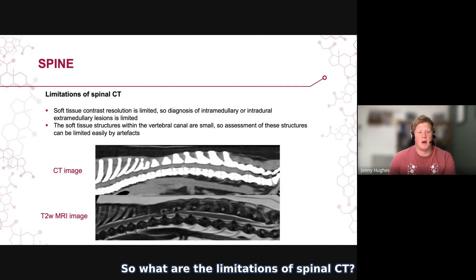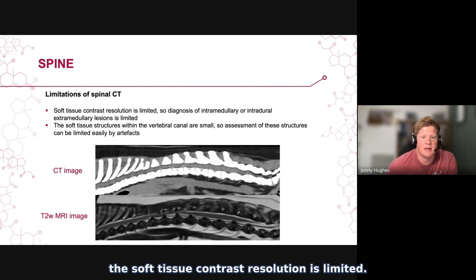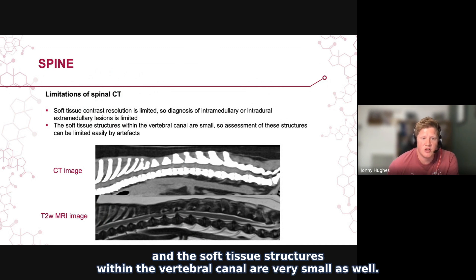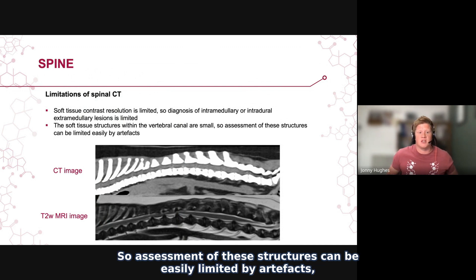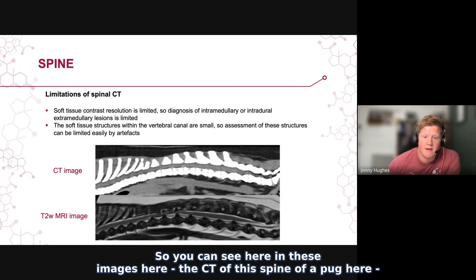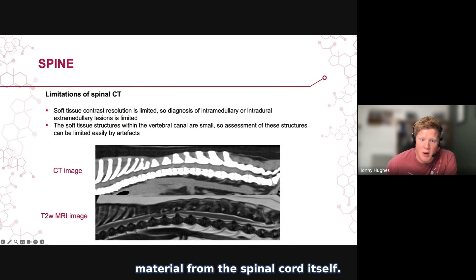What are the limitations of spinal CT? When trying to assess the spinal cord, the soft tissue contrast resolution is limited, so diagnosis of intramedullary or intradural extramedullary lesions is limited. The soft tissue structures within the vertebral canal are also very small, so assessment can be easily limited by artifacts in combination with that limited contrast resolution. As seen in these images of a pug's spine, it is very difficult to differentiate intervertebral disc material from the spinal cord itself.